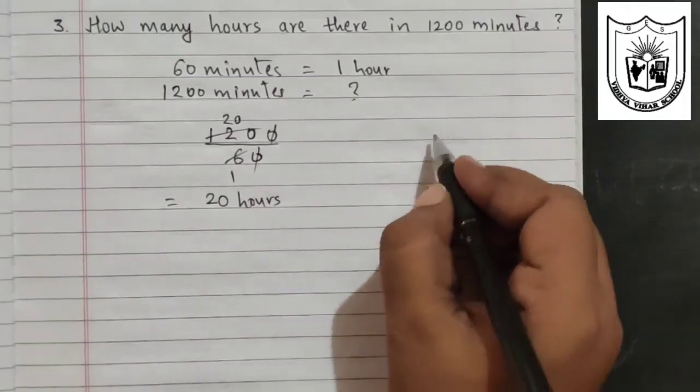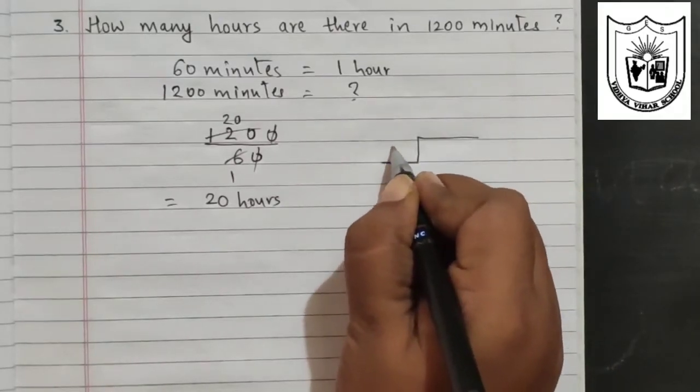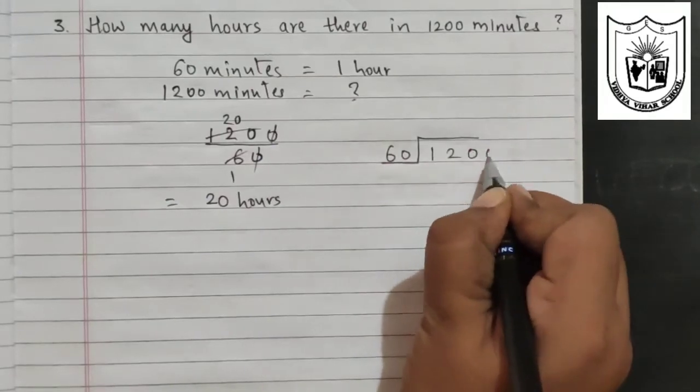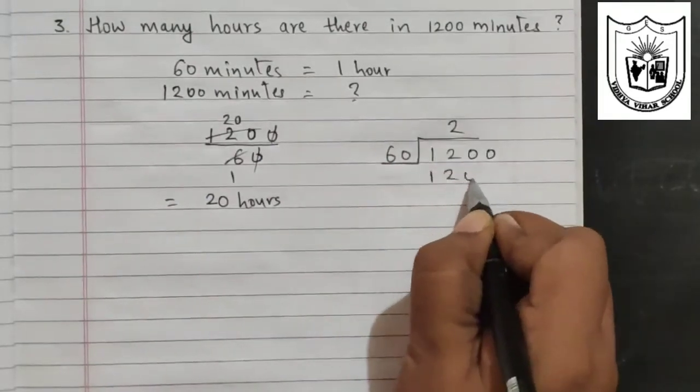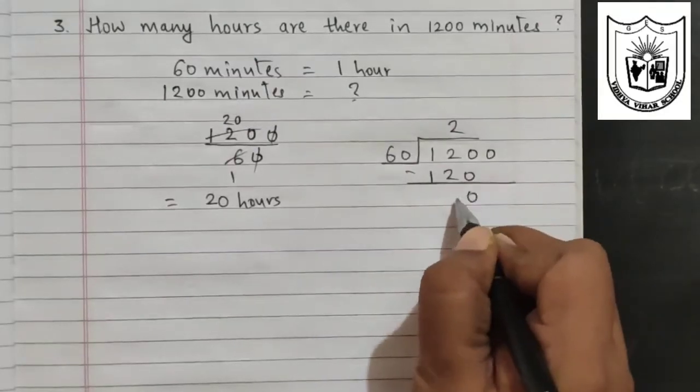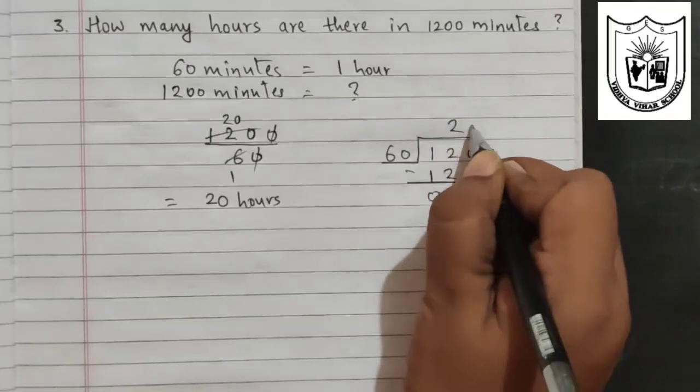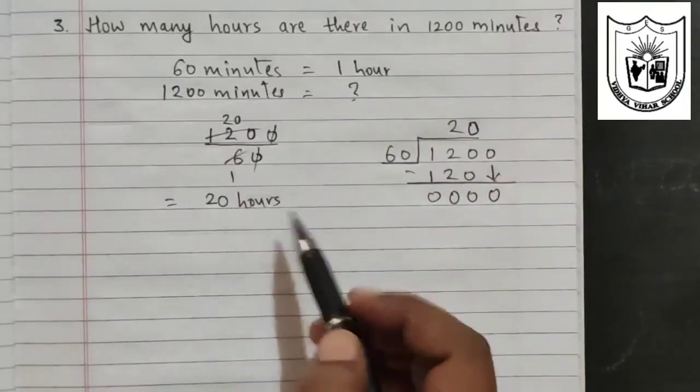Or after cancelling the 0s, if you want, you can even solve it this way. Without cancelling the 0s, directly if you want to divide. 60, 2s are will be 120. 0, 0, 0. And then when this 0 is brought down, you will also carry it on top. So you either do it this way or this way. Both the way we have the same answer.